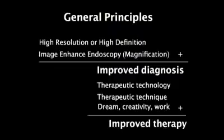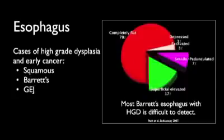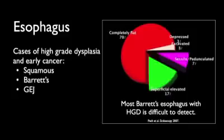The application of image-enhanced endoscopy may augment the diagnosis and therapy of gastrointestinal diseases. Pesh and colleagues recently reported that most Barrett's esophagus with high-grade dysplasia is of a completely flat morphology, reflecting the difficulty in its detection. Careful inspection of the esophageal lumen should be standard practice during upper endoscopic evaluation, due to the subtle appearance of esophageal lesions. Image-enhanced endoscopy has been applied towards identification of esophageal neoplasia in both squamous and Barrett's epithelium.